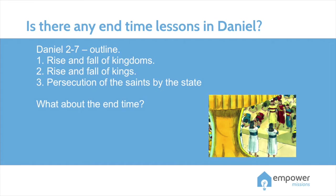Starting with chapter 2: the main thought is the rise and fall of kingdoms. Daniel chapter 3: the friends experience persecution — we can say 'persecution of the saints.' Daniel chapter 4: Nebuchadnezzar falls and then rises again — the fall and rise of the king.